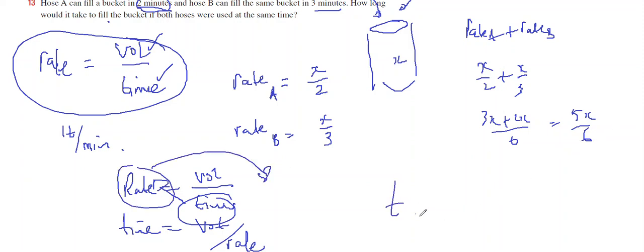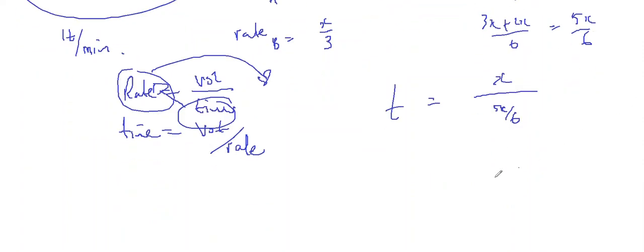So the time for both of them should be the volume, which is X, divided by the rate, which is 5X over 6, which is X times 6 over 5X. The X's cancel to leave you 6 over 5, or 1.2 minutes.